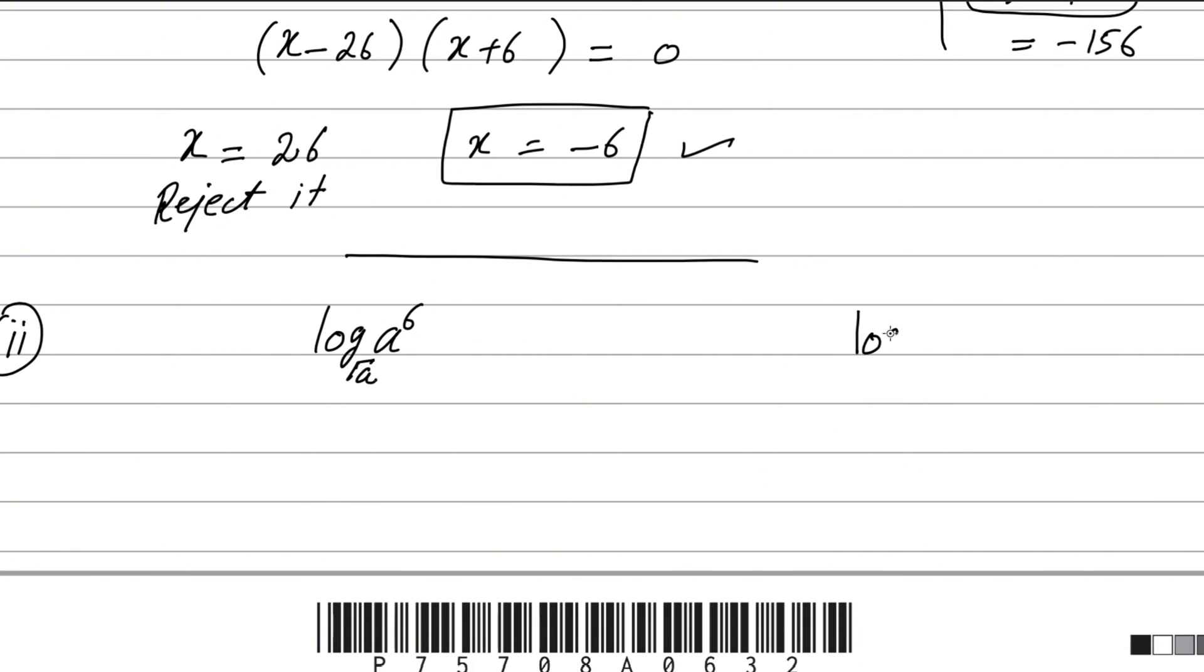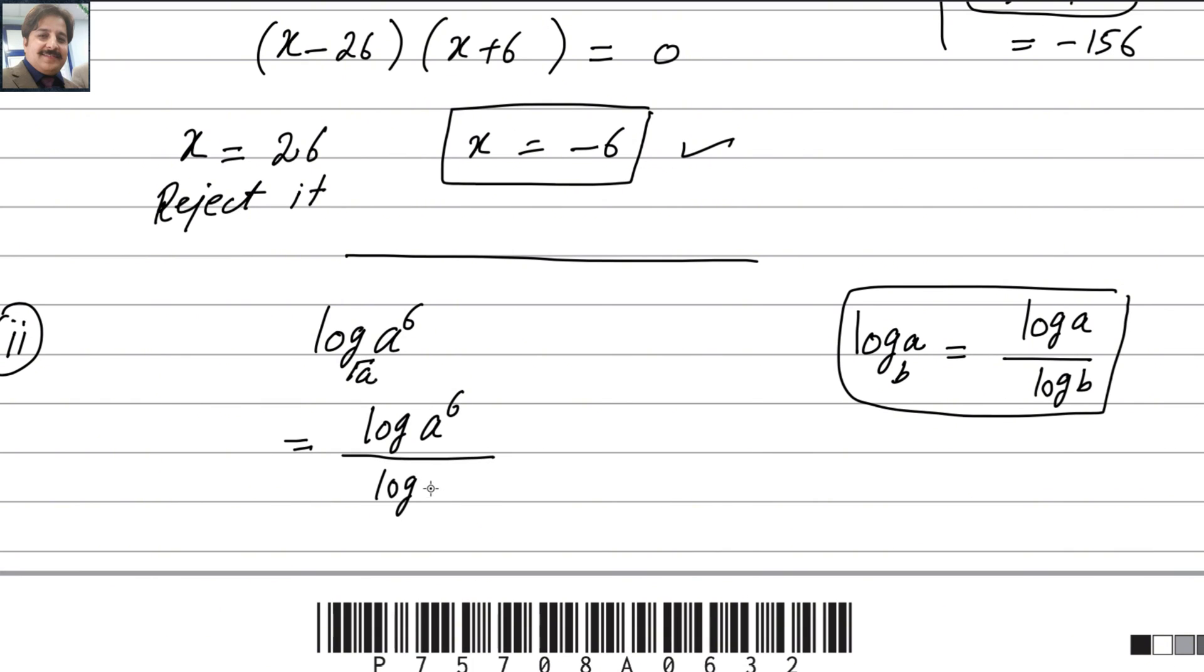By using this law, we can interchange this one. log_b(a) - it is called changing the base. You can write here log_a with base 10 and here log_b. There is no difference, this is the formula. Here base is 10. log_b(a) can be written as log(a)/log(b). Same way we can interchange this one: log(a⁶)/log(√a). Got it?